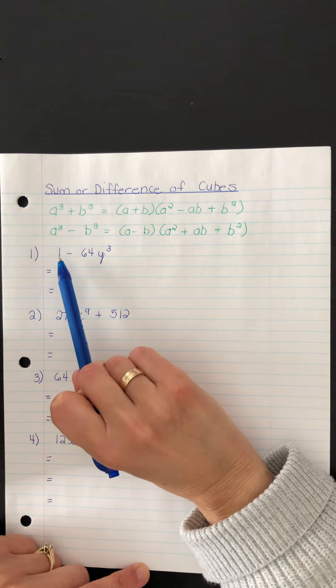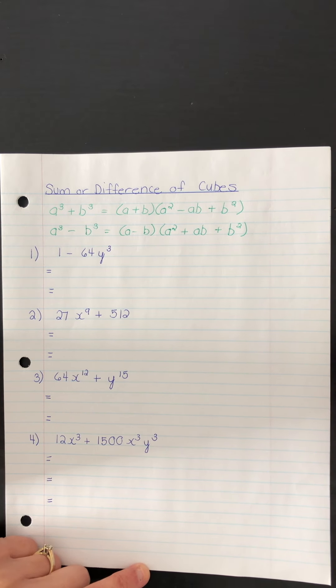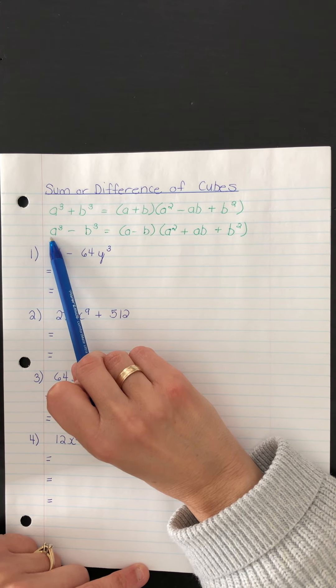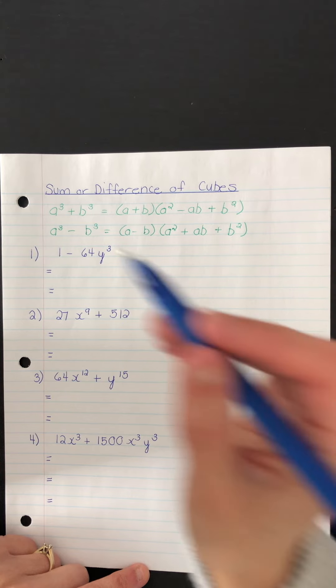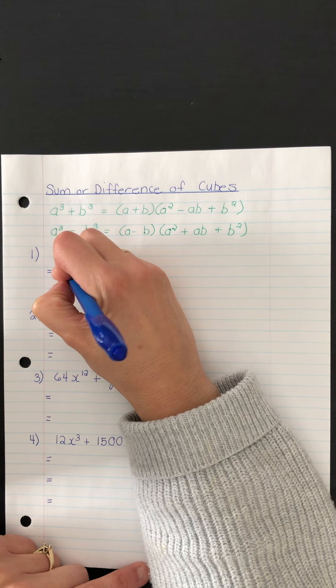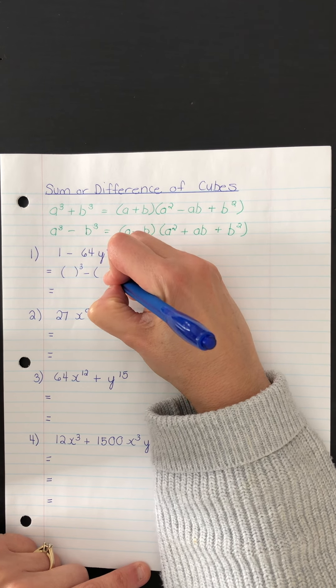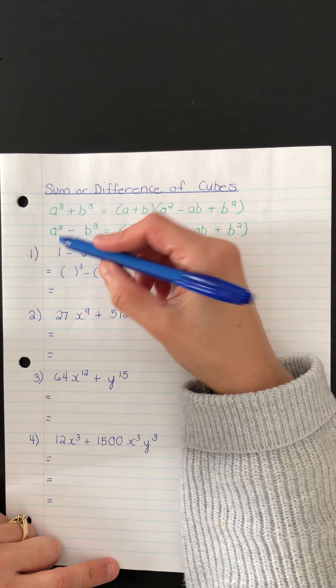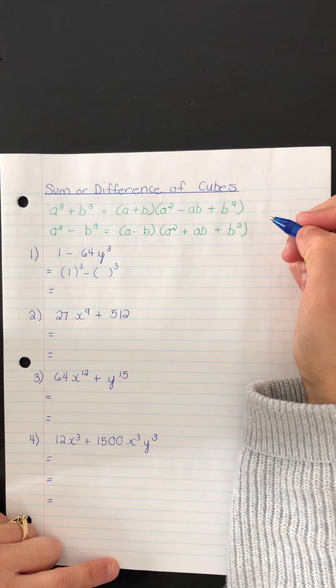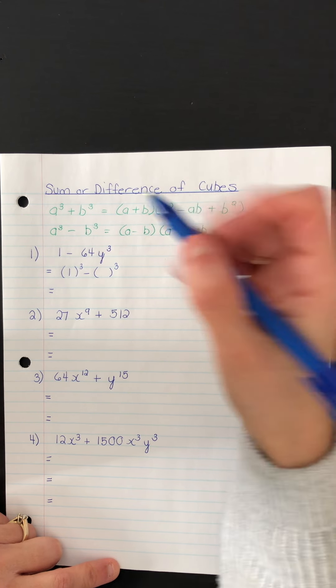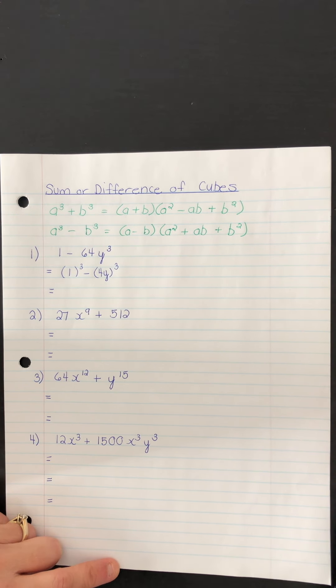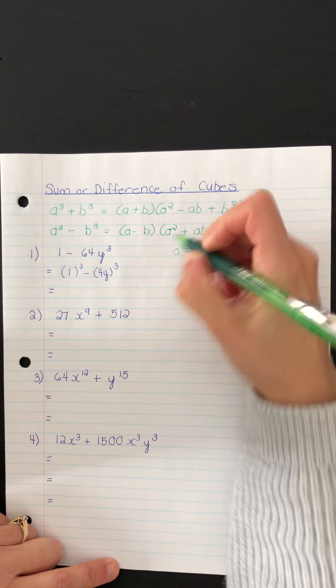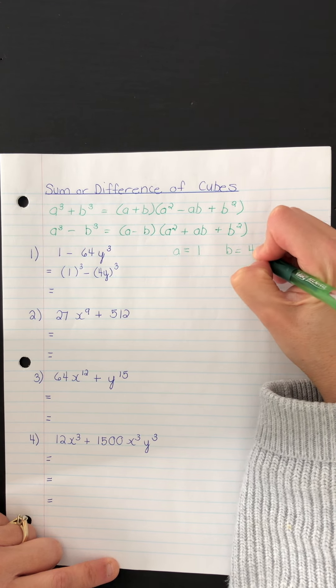So first of all, let's start with 1 minus 64y cubed. Our objective is to compare it with a cubed minus b cubed. This is done by taking the cube root of each term. So it might help you to start by actually writing our binomial in this way. The cube root of 1 is 1. The cube root of 64y cubed is 4y. And so we now know that our value of a is 1, and our value of b is 4y.